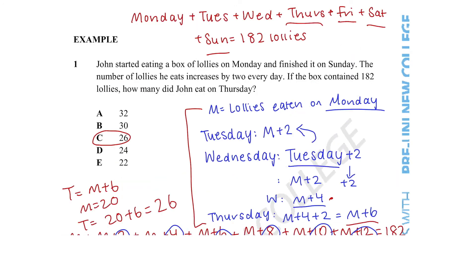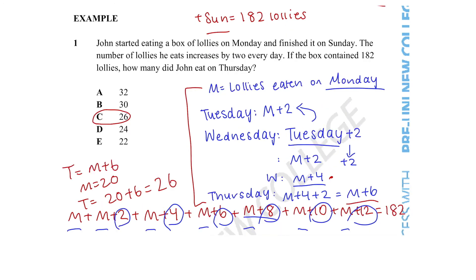Now let's provide a quick recap of the steps we took to solve this question. First, we need to express our unknown in an equation. Then, we use a value we already know — in this case 182 lollies — to express the unknown in terms of a sequence. After we've found the sequence, we can solve the equation to find the unknown. Hopefully this lesson has taught you some tips and tricks and made you more confident in solving determining unknowns questions in the patterns and algebra category. Thank you for listening.